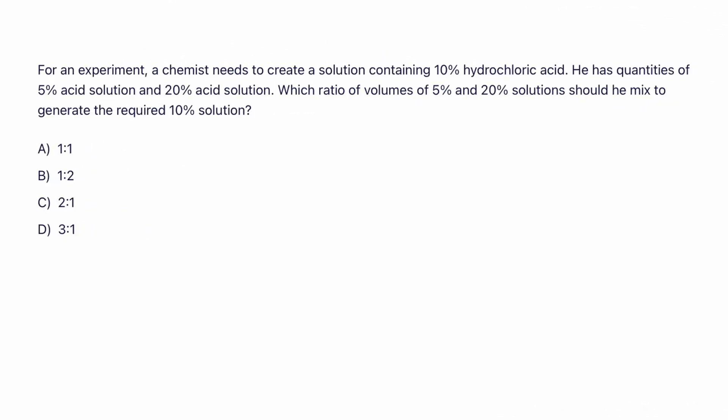So just follow along. Let's read the question. For an experiment, a chemist needs to create a solution containing 10% hydrochloric acid. He has quantities of 5% acid solution and 20% acid solution. Which ratio of volumes of 5% and 20% solution should he mix to generate the required 10% solution?